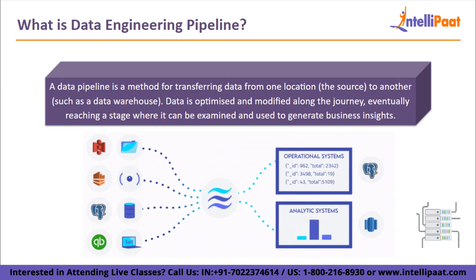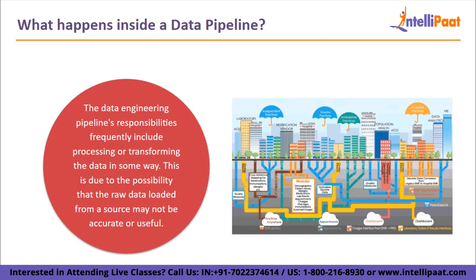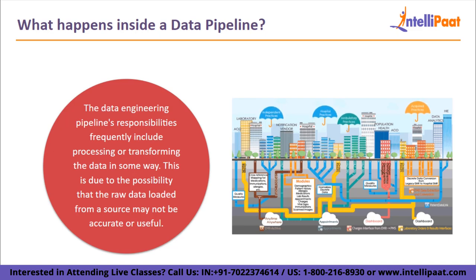Not all data pipelines include data processing. Usually, the main goal is to use raw data that has been transferred from database sources and SaaS platforms to data warehouses. However, the data engineering pipeline's responsibilities frequently include processing or transforming the data in some way. This is due to the possibility that the raw data loaded from a source may not be accurate or useful. In order for it to be useful at its next node, it must be modified.